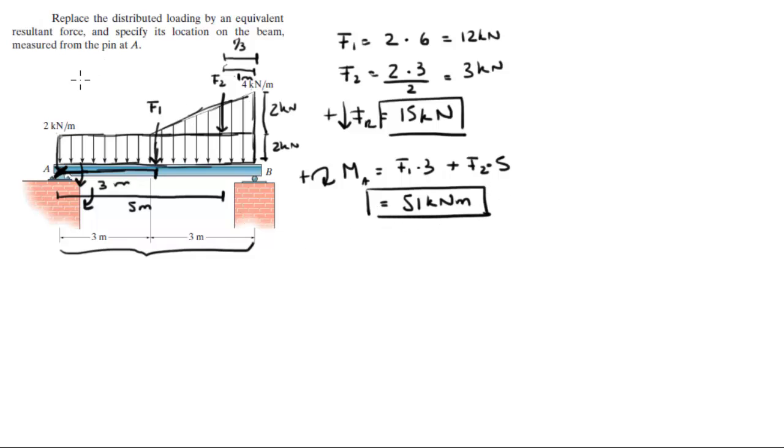Now I want you to find the distance measured from A. So the moment at A is equal to the resultant force times the distance. The moment at A is equal to 51, the resultant force is 15, D is what we're trying to find. You solve for D and you get that D is equal to 3.4 meters.